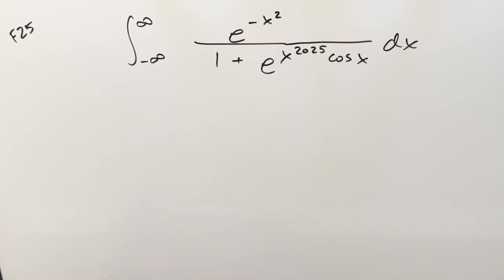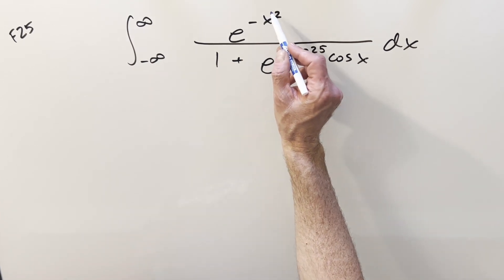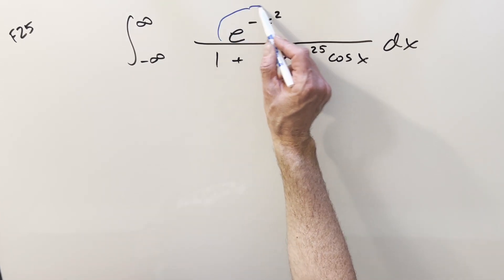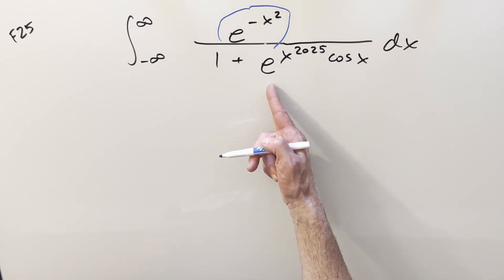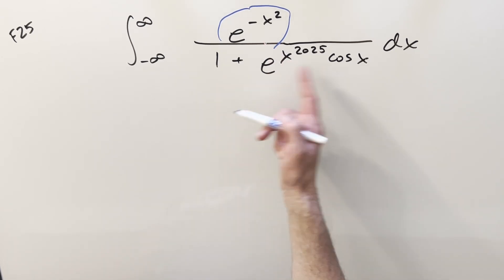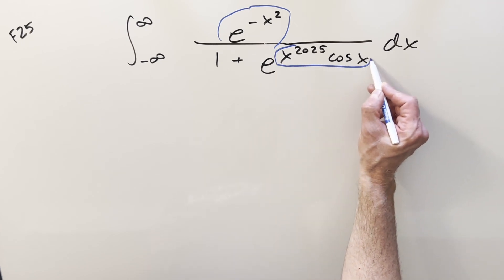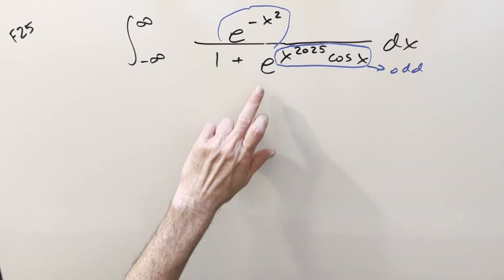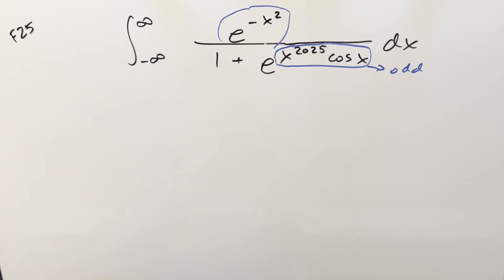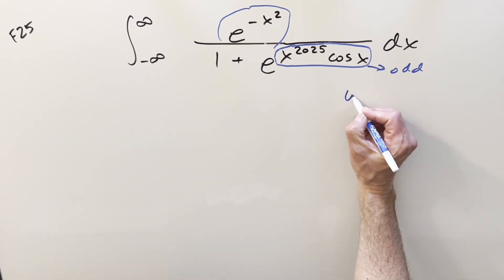This is the kind of problem we've done quite a few times on the channel. The thing to notice in the denominator is that we actually have an even function, just because we're squaring the x. And the exponent on the e is an odd function. Because we have it set up with symmetric bounds, this is one we could do very quickly. But let's do it out and see what happens.